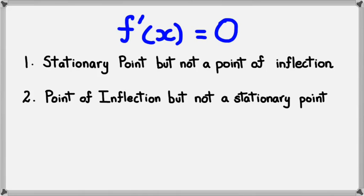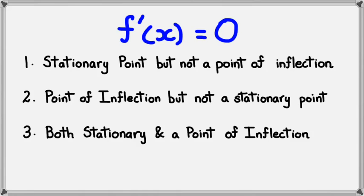The second situation is where it is a point of inflection, but it's not a stationary point. And finally, where it's both a stationary point and a point of inflection. So these are the three situations that could happen when f'(x) equals 0.